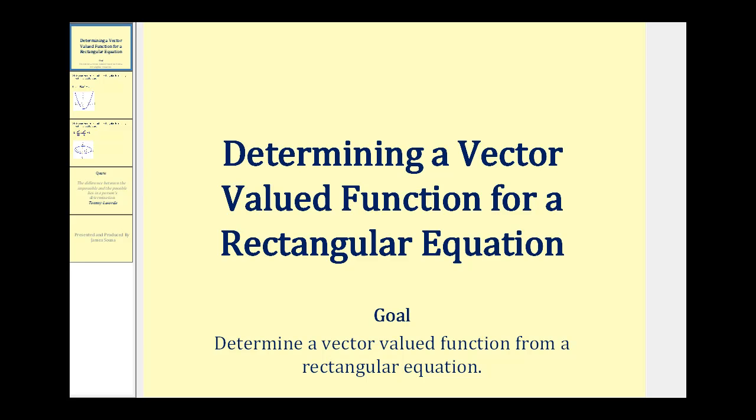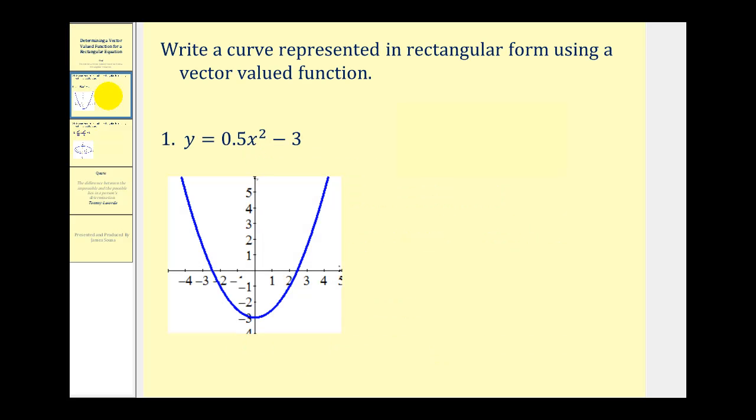Welcome to a video that will show how to determine a vector-valued function from a rectangular equation. For example, if we have the rectangular equation y = 0.5x² - 3, as we see graphed here, we should be able to express this using a vector-valued function.